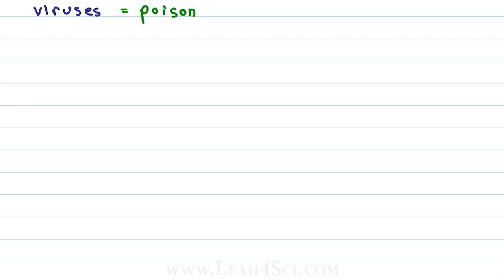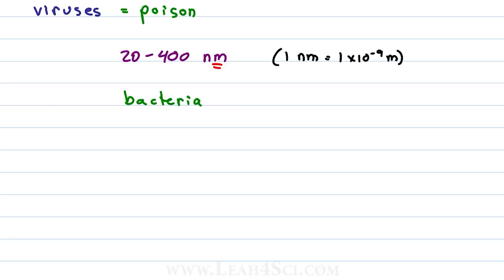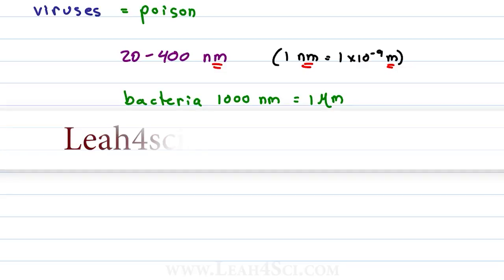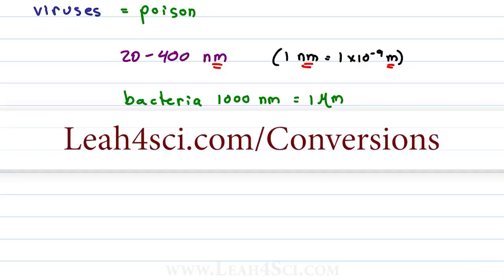Virus comes from the Latin word that means poison, and is the smallest infectious particle compared to everything we looked at. A typical virus will range in size from 20 to 400 nanometers, where a nanometer is 1×10⁻⁹ meters — which is a thousand times smaller than a bacteria that could be about 1000 nanometers or 1 micrometer. If you've forgotten how to interconvert between units, make sure to review the cheat sheet linked below or visit leah4sci.com/conversions.